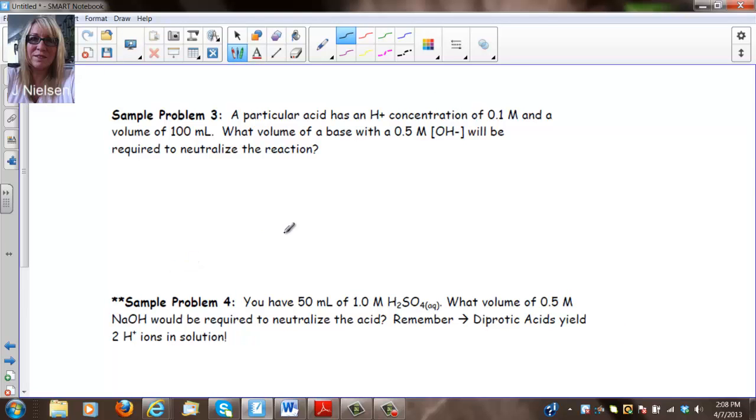Next problem. A particular acid has an H concentration of 0.1 molar. So this is some acid we don't know, so we're just going to label this HX. And this is our MA right here, molarity. And a volume of 100 milliliters. This is our VA. What volume of base? So we don't know VB, that's our question mark, with a 0.5 molar concentration. So there's my MB.